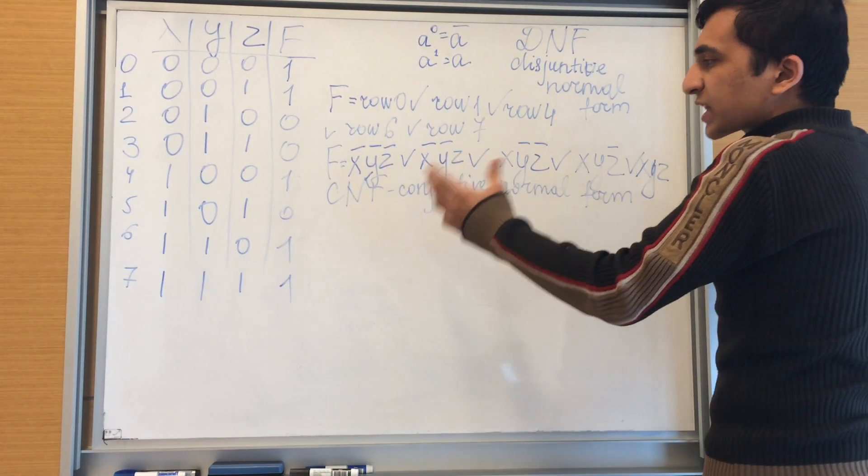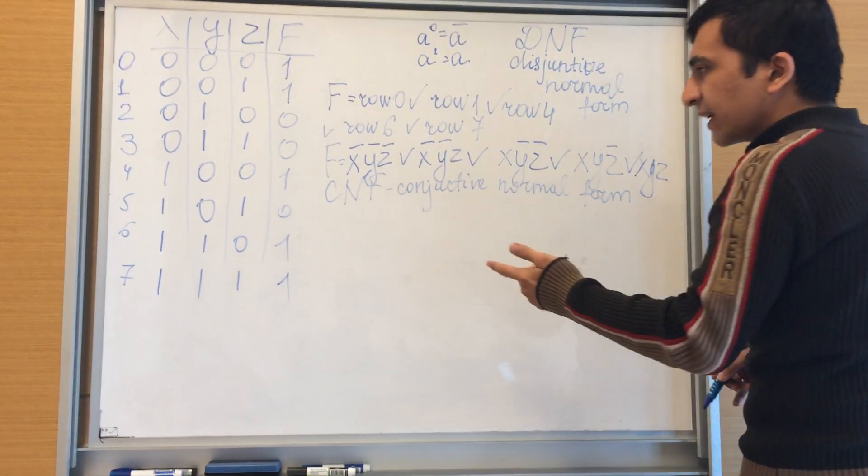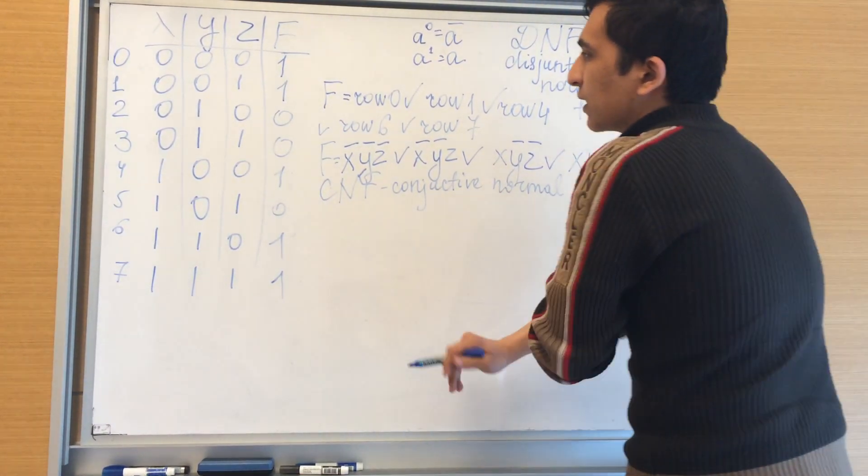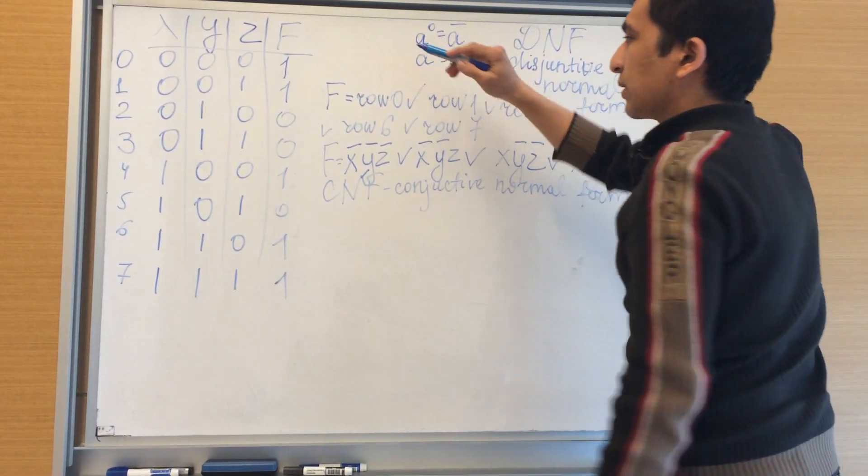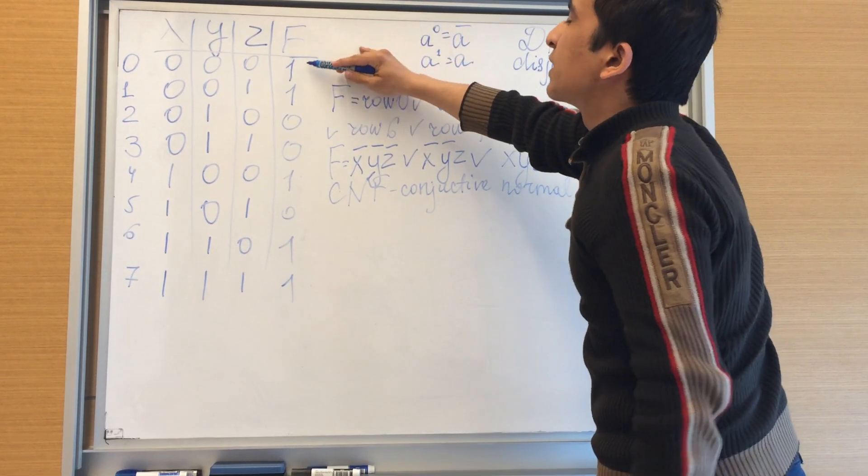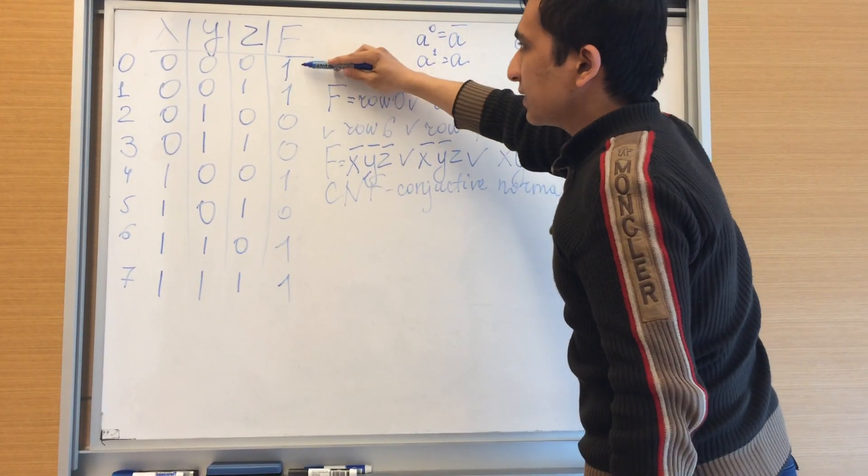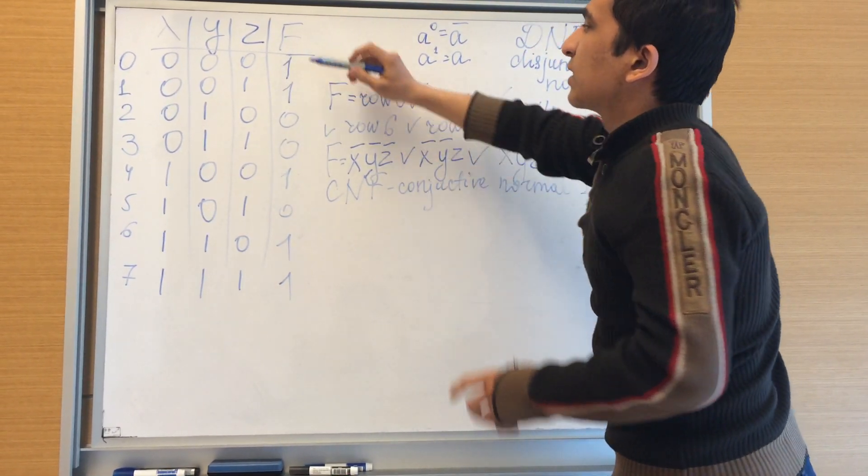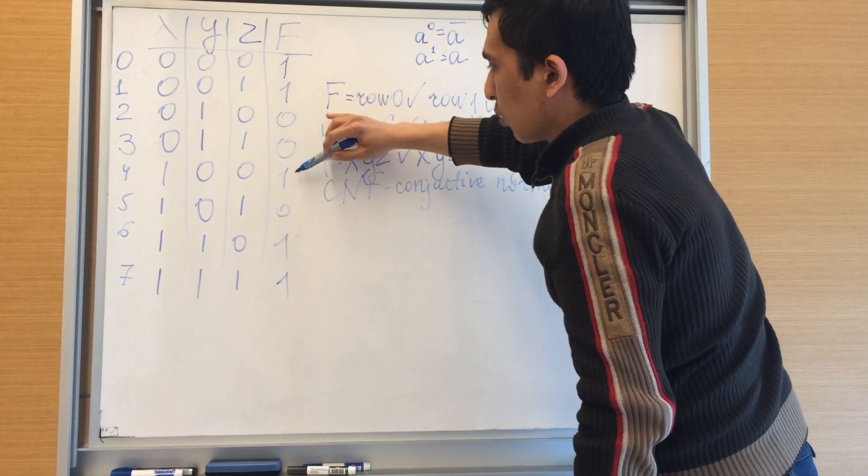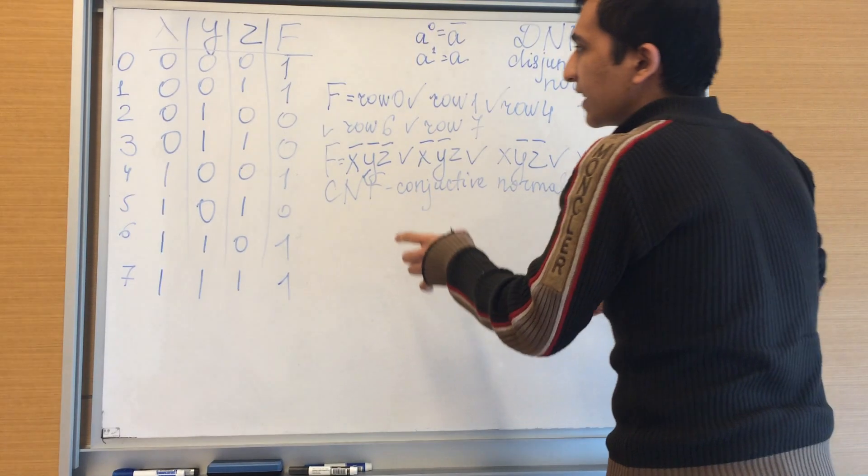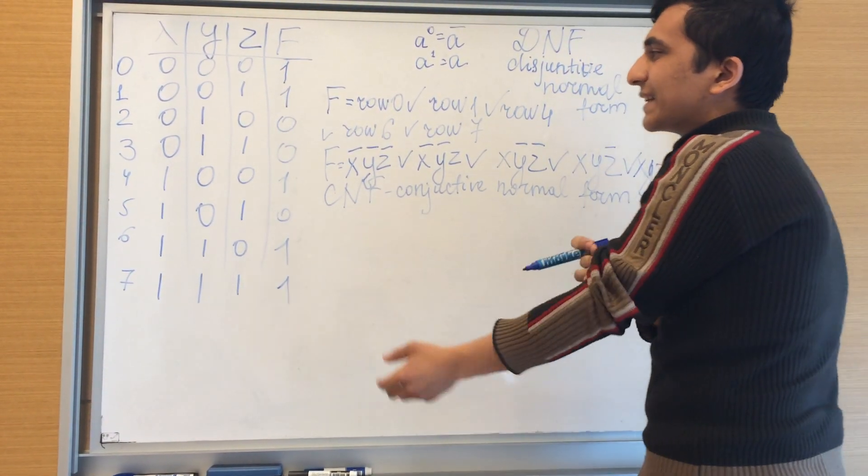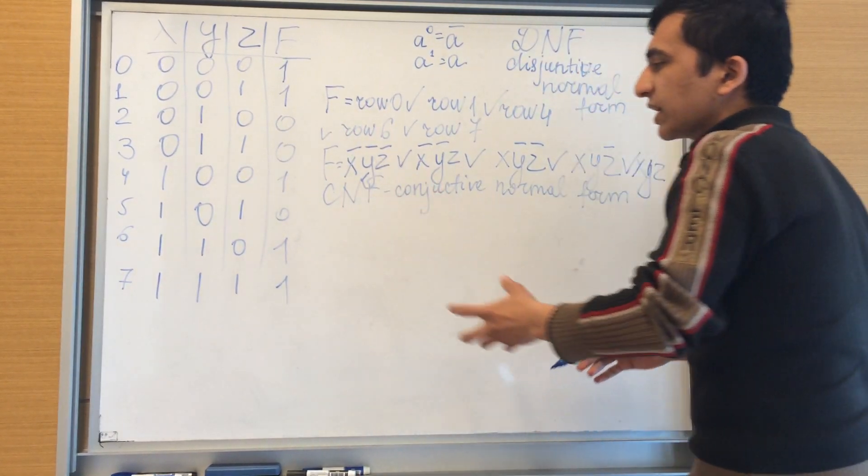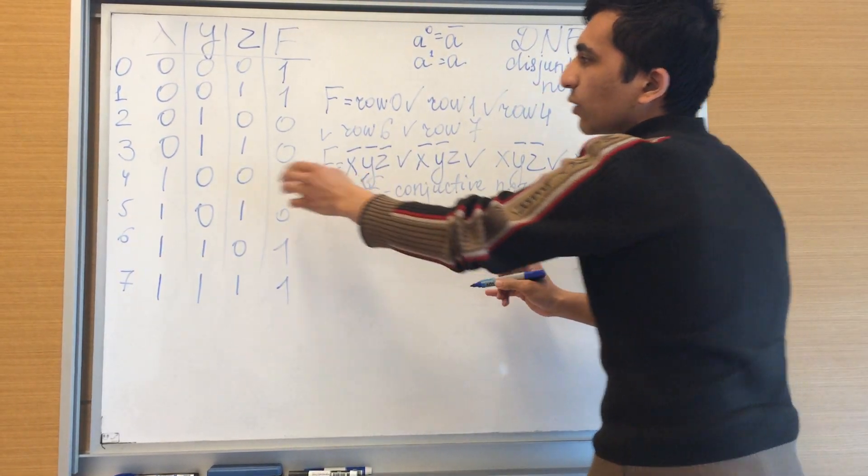As we can guess, the expression which we will get at the end will be conjunctions of some expressions. For DNF, the idea was that we have to take the ones, the rows which give us one, and think that they are or, or, or. For CNF, we have to take the zeros, meaning they are not the functions, they cannot be these ones, and we will get its negated forms.